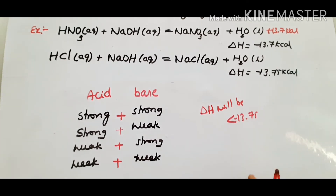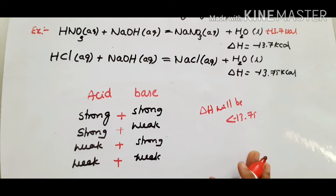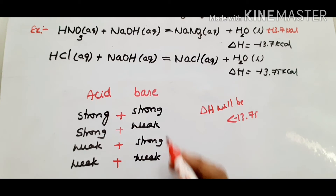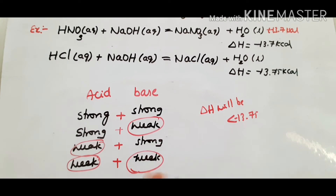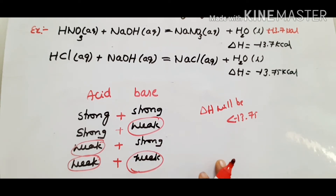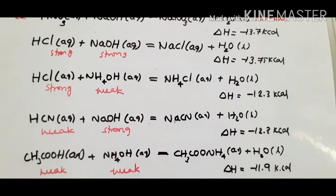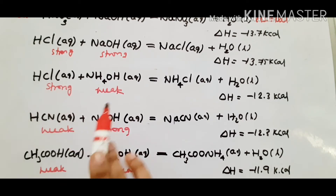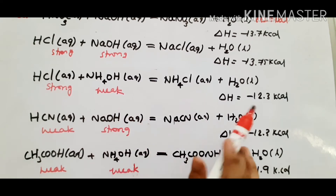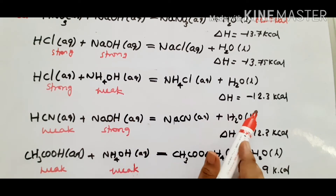Why? I will explain with examples. When you have a weak base or weak acid, some of the heat evolved is used to ionize the weak species. That energy is consumed rather than released. Strong acid and strong base: delta H is minus 13.7 kcal. Strong acid and weak base neutralized gives delta H of minus 12.3 kcal.